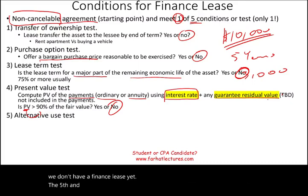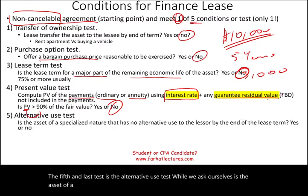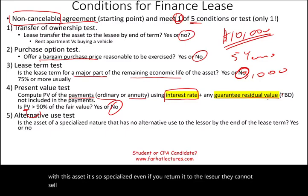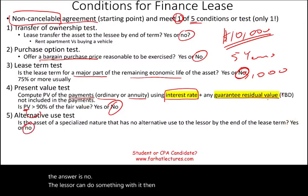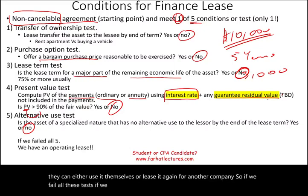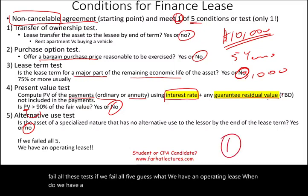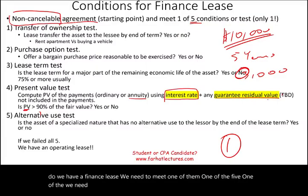The fifth and last test is the alternative use test. We ask: is the asset of a specialized nature? If the asset is so specialized to the lessee's company that once returned, the lessor cannot sell it or use it for anything else, then we have a finance lease. If the lessor can use it themselves or lease it to another company, we fail this test. If we fail all five tests, we have an operating lease. We only need one 'yes' to have a finance lease.